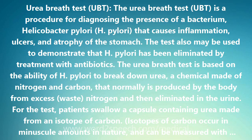The Urea Breath Test is based on the ability of H. pylori to break down urea, a chemical made of nitrogen and carbon that normally is produced by the body from excess nitrogen and then eliminated in the urine. For the test, patients swallow a capsule containing urea made from an isotope of carbon. Isotopes of carbon occur in minuscule amounts in nature and can be measured with special testing machines.